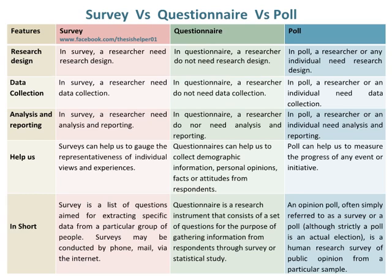In short, a survey is a list of questions aimed at extracting specific data from a particular group of people. Surveys may be conducted by phone, mail, or via the internet. Whereas, a questionnaire is a research instrument that consists of a set of questions for the purpose of gathering information from respondents through survey or statistical study. Whereas, an opinion poll — often simply referred to as a survey or a poll, although strictly a poll is an actual election — is a human research survey of public opinion from a particular sample.